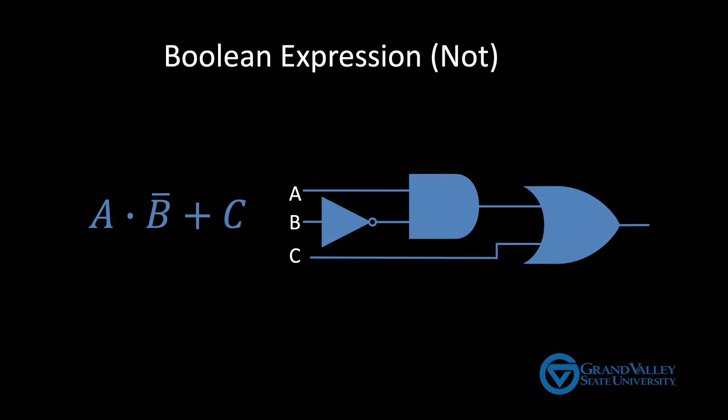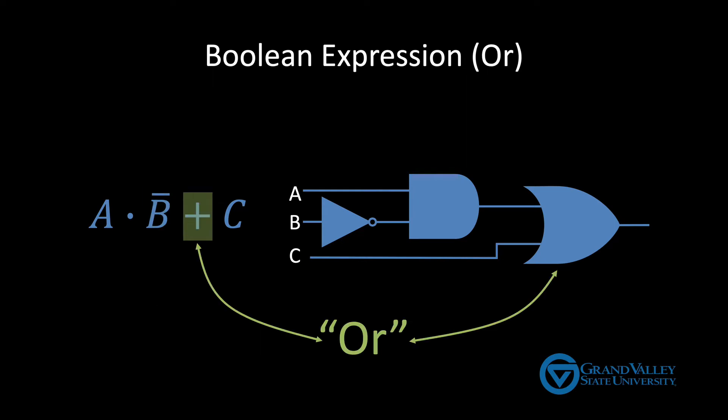For starters, the overline means not. Next, the plus means or. Now it may seem strange at first to equate a plus with or, but let's think about addition for a second.